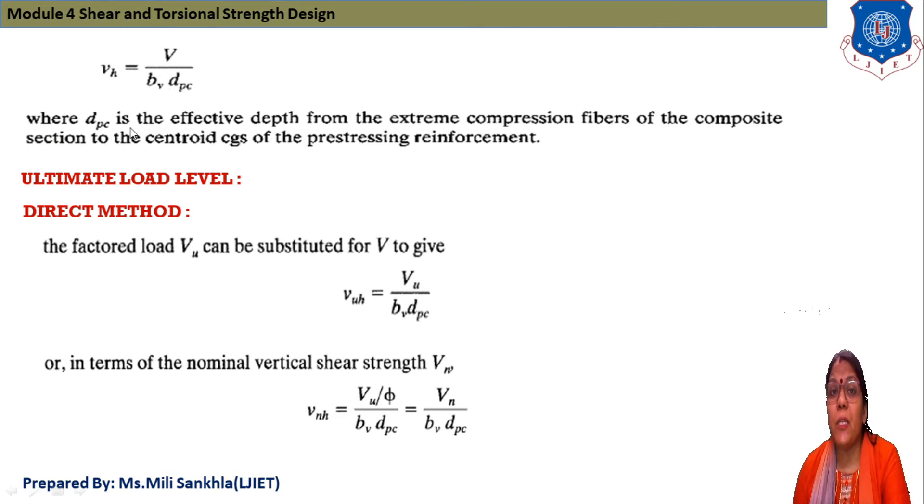Now vh = V/(bv·dpc), where dpc is the effective depth from extreme compression fiber of composite section to the center of CGS of prestressing reinforcement.